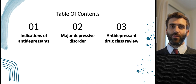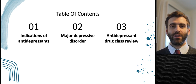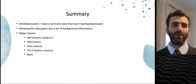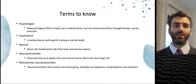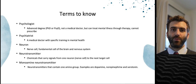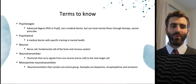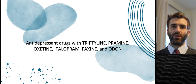In summary, antidepressants are used for a lot more than just depression, and there are many different types. We covered the DSM-5 diagnostic criteria for major depressive disorder and its symptoms. The drug class review covered SSRIs, SNRIs, atypical antidepressants, TCAs, and MAOIs. Knowing the class gives you a lot of side effect information. Key terms to know include the difference between psychologist and psychiatrist, what a neuron is (a nerve or brain cell), what a neurotransmitter is (how brain cells communicate), and what a monoamine is — dopamine, norepinephrine, and serotonin. Thank you for listening.